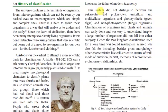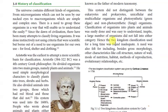Linnaeus's system did not distinguish between eukaryotes and prokaryotes, unicellular and multicellular organisms, or photosynthetic (green algae) and non-photosynthetic (fungi) organisms. Classification of organisms into only plants and animals was easy to understand, but a large number of organisms did not fall into either category. Hence the two kingdom classification was found inadequate. A need arose to include other characteristics like cell structure, nature of wall, mode of nutrition, habitat, methods of reproduction, and evolutionary relationships.